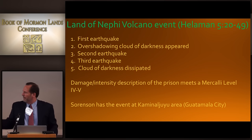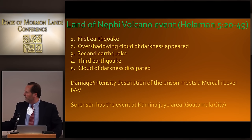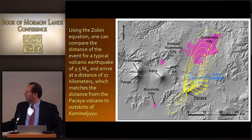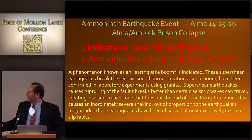I also looked at the Land of Nephi volcanic event — the valley of Guatemala that Neil talked about. There were multiple earthquakes, an overshadowing cloud of darkness, then the cloud dissipated. The intensity meets a Mercalli level IV or V. Sorenson placed that event at Guatemala City. Using the Zobin equation, I back-calculated the distance from an active volcano — it matched, giving the range of magnitude you'd expect off a volcanic earthquake. So that fit.